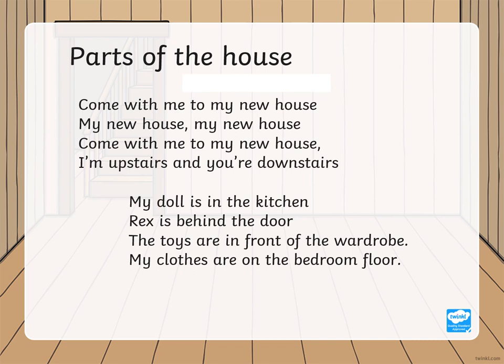How was the song, boys and girls? I hope you enjoyed it. Let's proceed with the lesson. Now, let's have a look at the lyrics given to you here. Let's find out which parts of the house were mentioned. From these lyrics, we can see the words upstairs, downstairs, kitchen, as well as bedroom. These are only several examples of parts of the house. After this, we will be looking at several other examples of parts of the house.